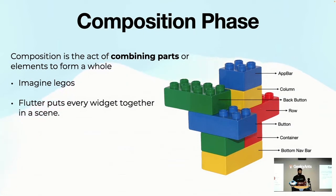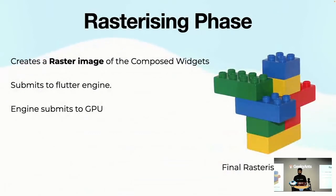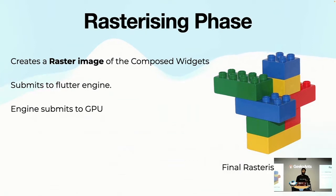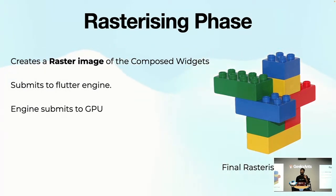After composition comes the rasterizing phase. The rasterizing phase takes all the compositions and creates a raster image from them. That raster image is sent to the Flutter engine, which submits it to the GPU. The GPU then renders that onto your screen, usually at 60 Hz per second. Everything is rendered in pixels — each pixel knows what it has to render — and all of that is handled by the GPU.